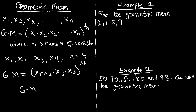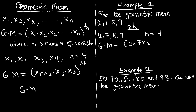Find the geometric mean for 2, 7, 8, and 9. Our n is 4. So GM equals 2 multiplying 7 multiplying 8 multiplying 9, raised to the power 1 over 4. This gives us a GM of 5.64.